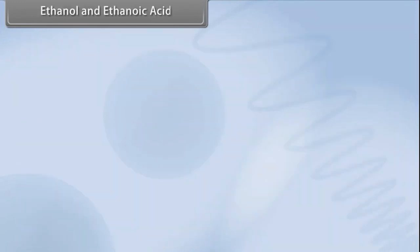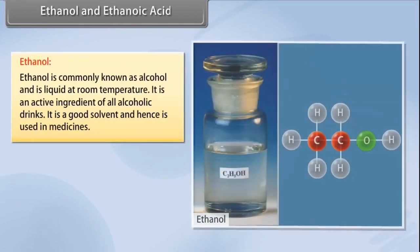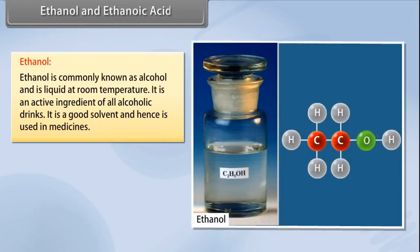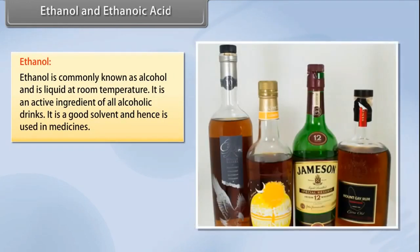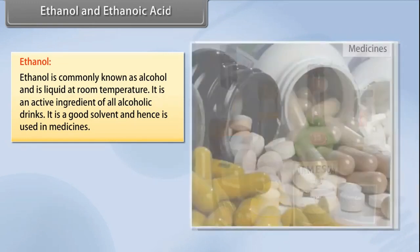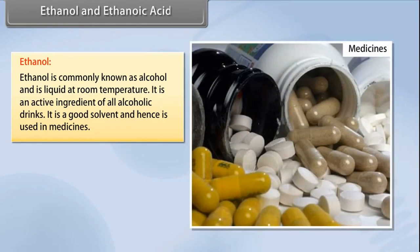Ethanol and ethanoic acid. Ethanol is commonly known as alcohol and is liquid at room temperature. It is an active ingredient of all alcoholic drinks. It is a good solvent and hence is used in medicines. Consuming small quantities of dilute ethanol leads to drunkenness, but intake of a small quantity of pure ethanol can lead to death.